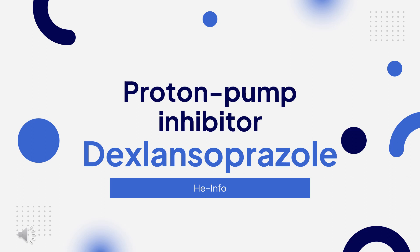Dexlansoprazole is a proton pump inhibitor used to help gastrointestinal ulcers heal, to treat symptoms of gastroesophageal reflux disease (GERD), to eradicate Helicobacter pylori, and to treat hypersecretory conditions such as Zollinger-Ellison syndrome.